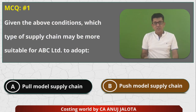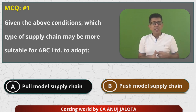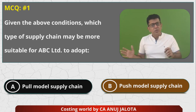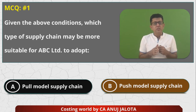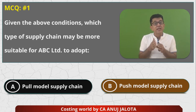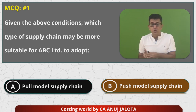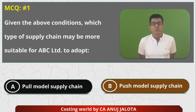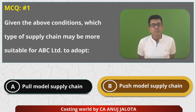These three points tell me that the push model is apt for this company. Push system basically works only where demand can be predicted very accurately. Under push system you will have a lot of stock, producing on a large scale — which brings a cost advantage. Working capital requirement is very high but that is not a problem because they generate enough profits. So the answer should be B — push model supply chain.